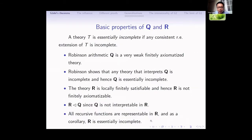Here is a summary of the basic properties of Q and R. Q is a very weak, finitely axiomatized theory. Robinson shows that any theory interpreting Q is incomplete, and so Q is essentially incomplete. Theory R is locally finitely satisfiable, and hence it is not finitely axiomatizable. R is weaker than Q with respect to interpretation because Q is not interpretable in R. All recursive functions are representable in R, and R is essentially incomplete. So both of these two theories are essentially incomplete.